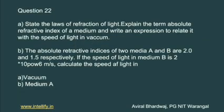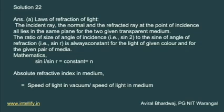Question 22: State the law of reflection of light. Explain the term absolute refractive index of a medium and write an expression to relate it with the speed of light in vacuum. The next part is a numerical: the absolute refractive index of medium A and medium B are 2.0 and 1.5 respectively. If the speed of light in medium B is 2.2 × 10⁸ m/s, calculate the speed of light in vacuum and in medium A. This is a very important question for board exams.